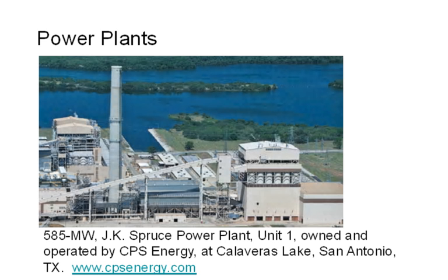In the city of San Antonio, CPS Energy is the municipally owned utility — it provides electricity and natural gas. We should know where our electricity comes from. CPS Energy produces and sells electricity. Probably 40 to 60 percent is produced by burning coal, which is trained in — Wyoming coal arriving via long coal trains — and burned in power plants.